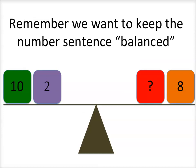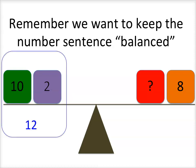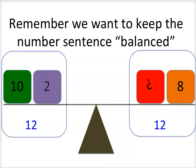Well, we need to add both sides. The left-hand side — ten plus two — equals twelve. So we want the other side to equal twelve as well. We already have an eight there, so what number will go in the red box to make the number sentence equivalent? Well, eight plus four equals twelve, so we're going to put a four in that box.